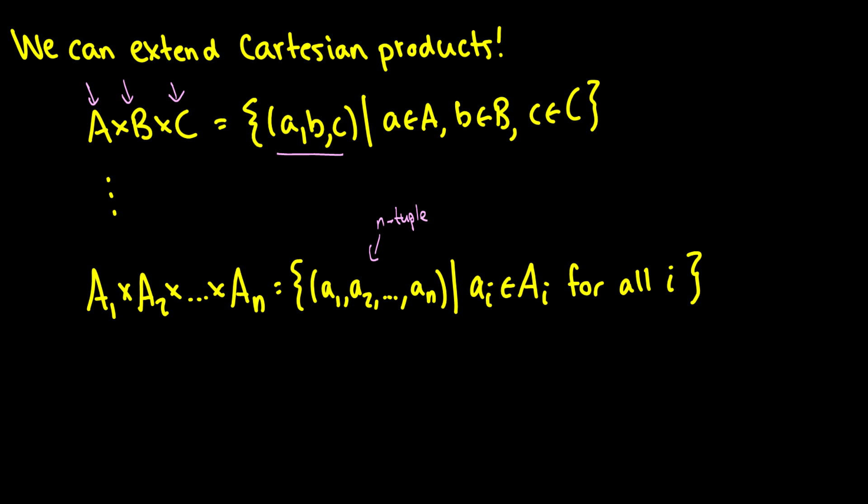Where the element a is in the set capital A, which is always capitals for sets, then we have b in B and c in C. So the first element comes from A, the second one comes from B, the third one comes from C, and these are all the ordered pairs.